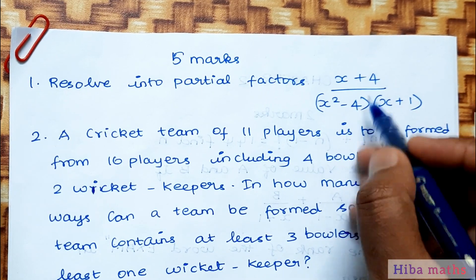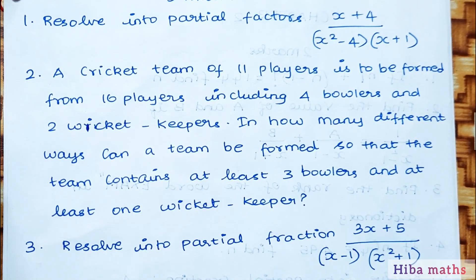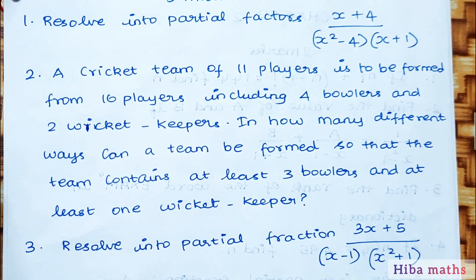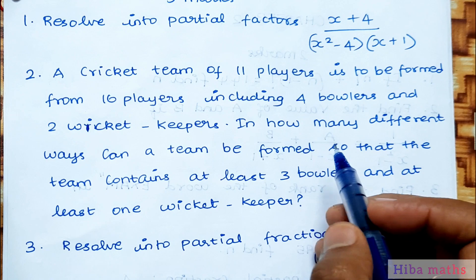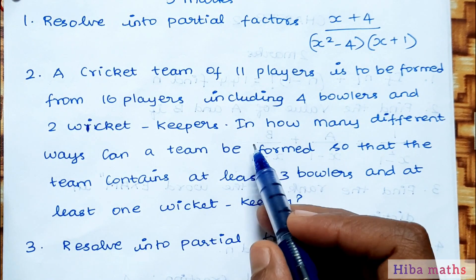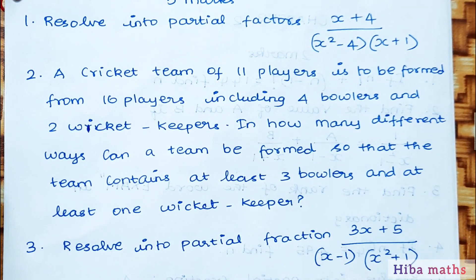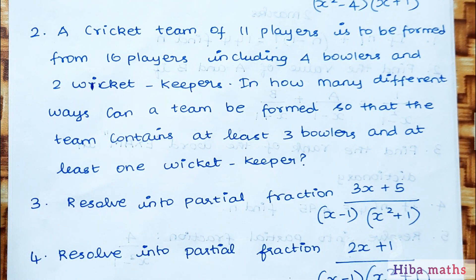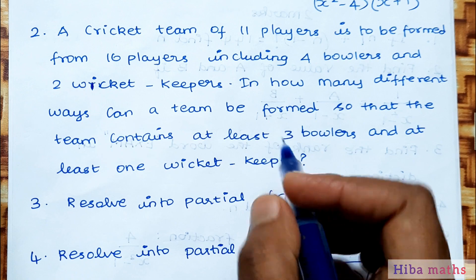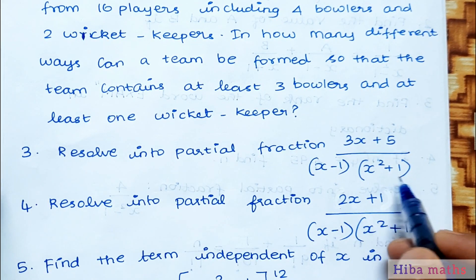Application type question: a cricket team of 11 players is to be formed from 16 players including 4 bowlers and 2 wicket keepers. In how many different ways can the team be formed so that it contains at least 3 bowlers and at least 1 wicket keeper?